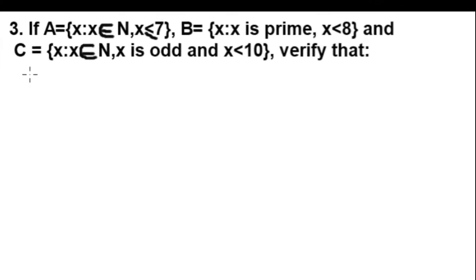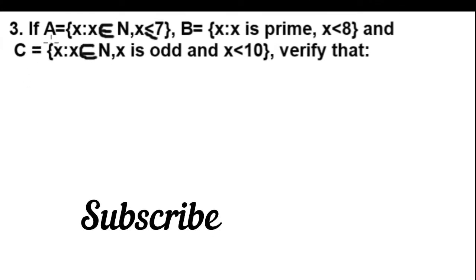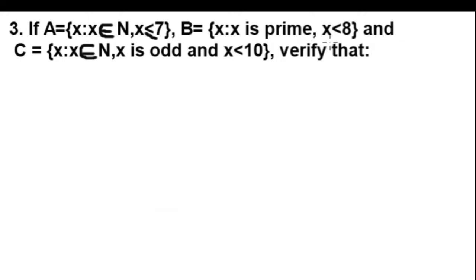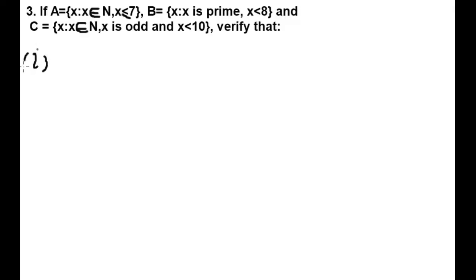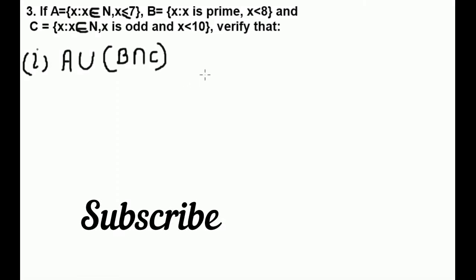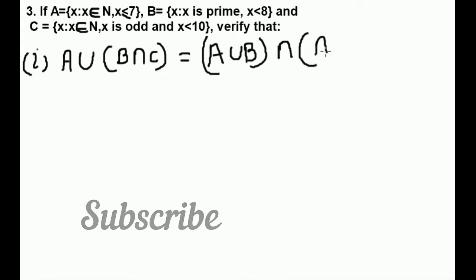Question Number 3: If set A is the set of x where x is an element of N (natural numbers) and x is less than or equal to 7; B is the set of x where x is a prime number and x is less than 8; and C is the set of x where x is an element of N and x is an odd number and x is less than 10. We need to verify that A ∪ (B ∩ C) = (A ∪ B) ∩ (A ∪ C).